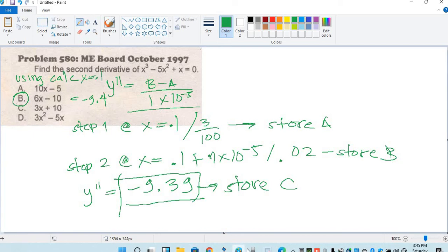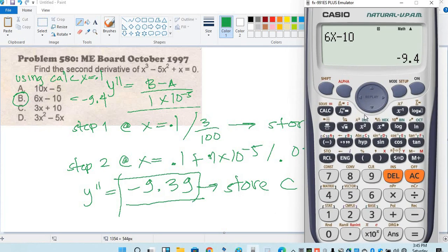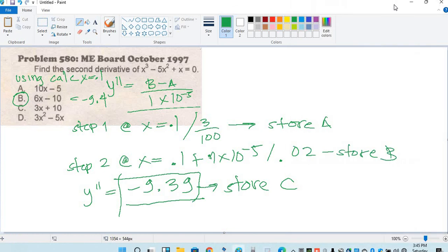Let's try letter C: 3x plus 10. Calc, x is 0.1, equal 10.3. This is wrong, letter C is wrong.